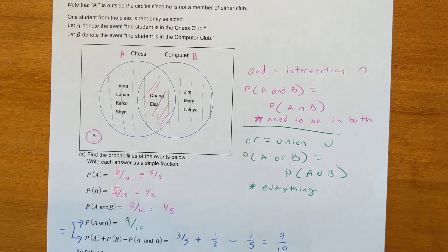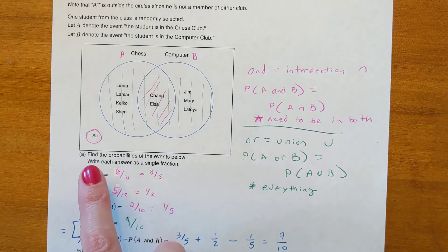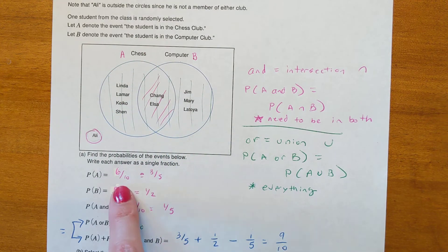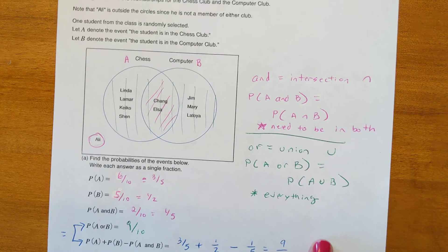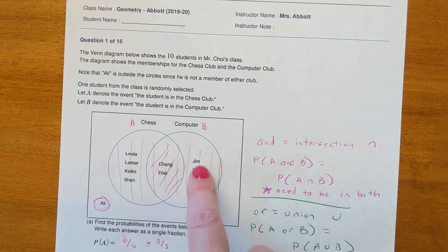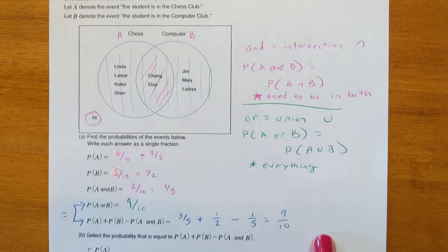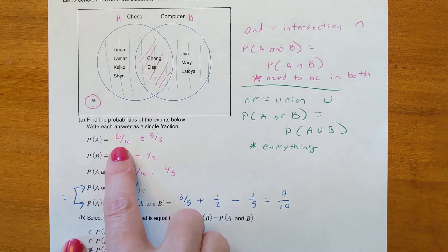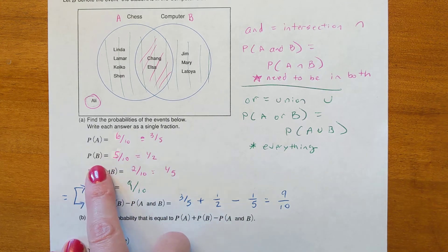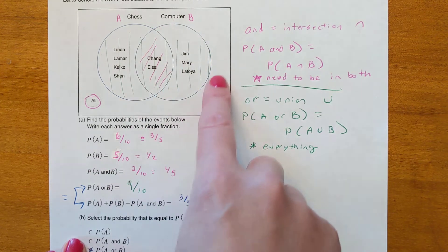Part A: find the probability of the events below; write each answer as a single fraction. The probability of event A — being in circle A — well, there are six names out of a total of ten. You can add up all the names and find there are ten total, so P(A) = 6/10, which reduces to three-fifths.